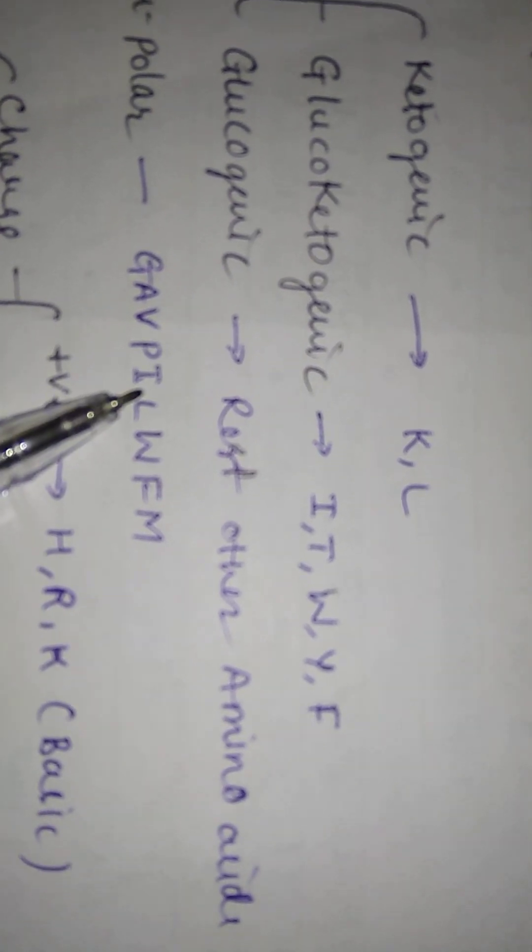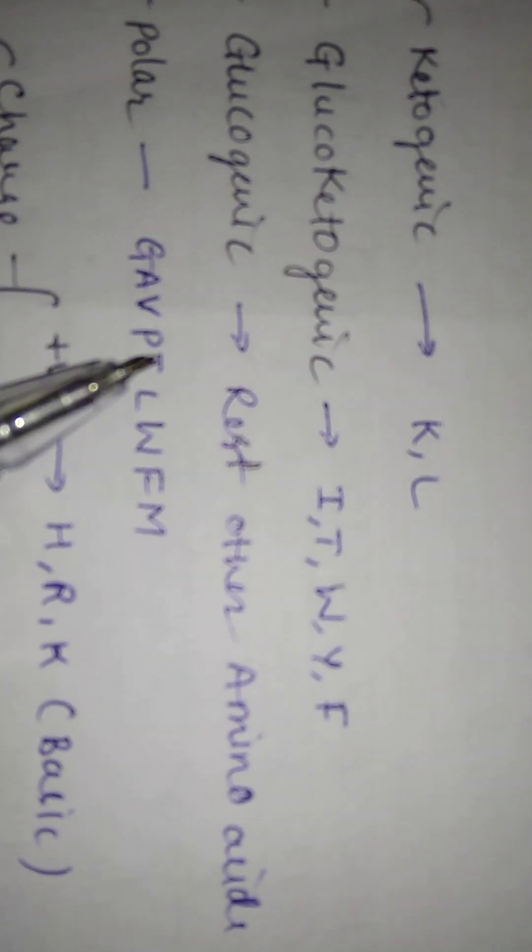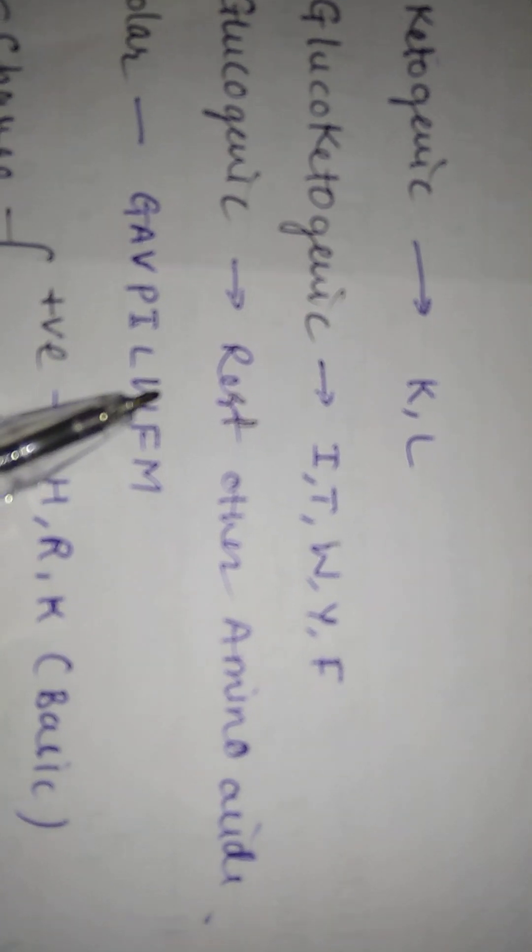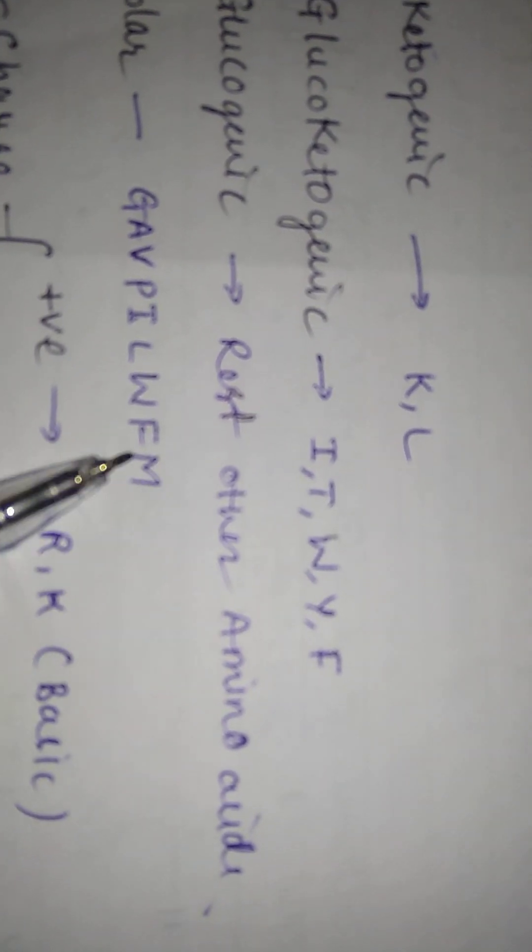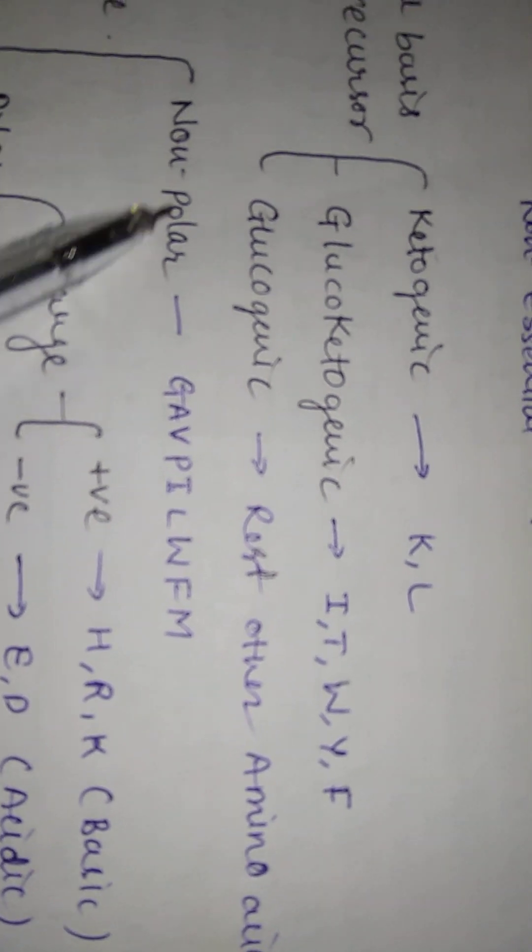P for proline; I for isoleucine; L for leucine; W for tryptophan; F for phenylalanine; and M for methionine. So we call these non-polar.